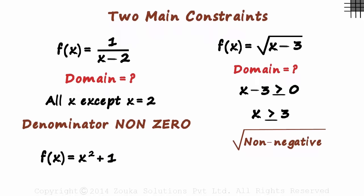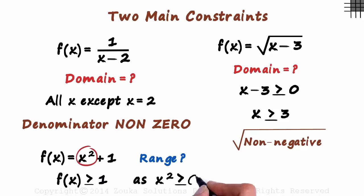Now for the last problem of this session, find the range of this function. By range, we mean all possible output values. Look at this term. Can it be negative? No. The square of any number will be greater than or equal to zero. So the minimum value of the function will be zero plus one, which equals one. F of x will be greater than or equal to one, as x squared will be greater than or equal to zero.